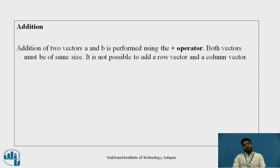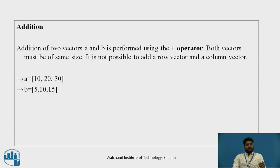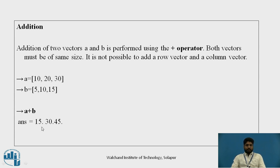For addition, the addition of two vectors a and b is performed using the plus operator. Both vectors must be of the same size — it is not possible to add a row vector and a column vector. For example, a and b both as row vectors: a + b gives 10+5=15, 20+10=30, 30+15=45.